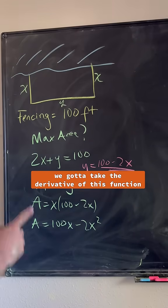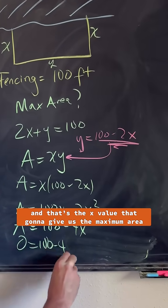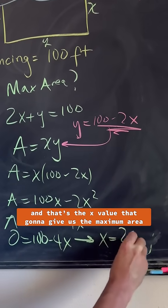And since they want us to find the max area, we got to take the derivative of this function. And once we take the derivative, we set it equal to zero, we solve for x, and that's the x value that's going to give us the maximum area.